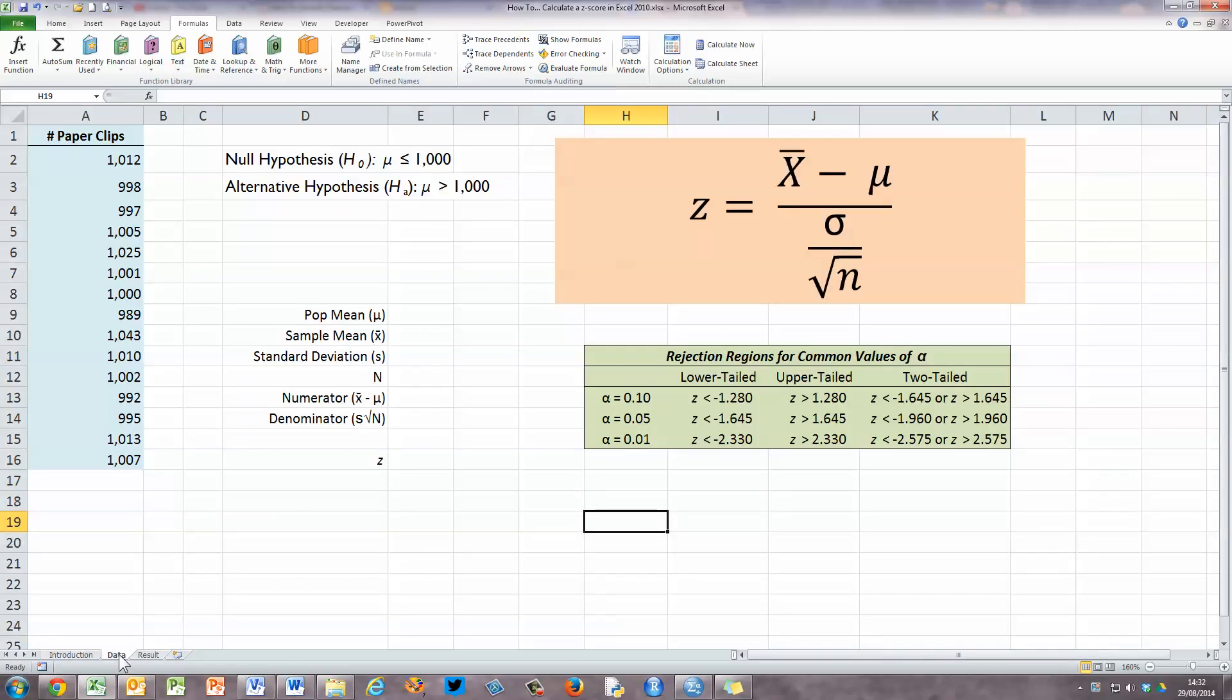So a Z-score, as we know, is used when we want to take a one-sample Z-test. We want to be able to see if a sample is representative of a population, so it's a single sample in a single population.